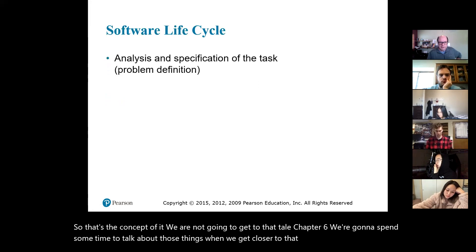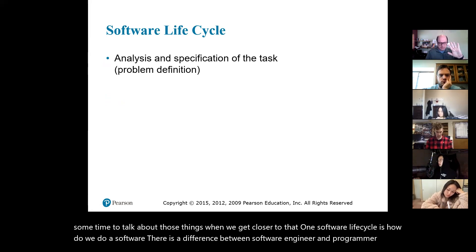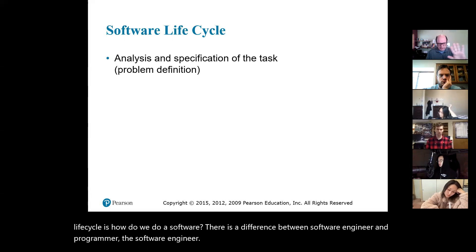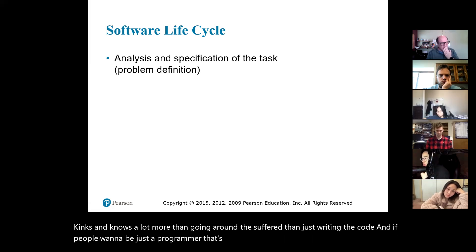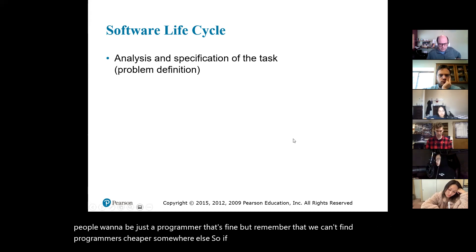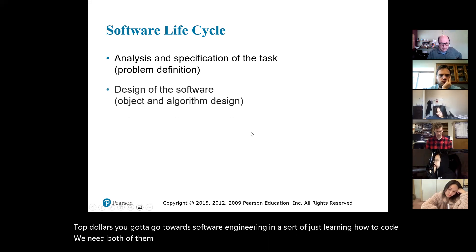Software life cycle is how we develop software. There is a difference between a software engineer and a programmer. The software engineer thinks and knows a lot more about the entire software process than just writing code. If people want to be just a programmer, that's fine, but remember that we can find programmers cheaper somewhere else. If you want top dollars, you need to move toward software engineering instead of just learning how to code. We need both, but you have to decide which one you want to do.